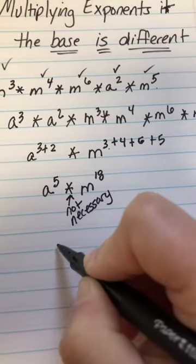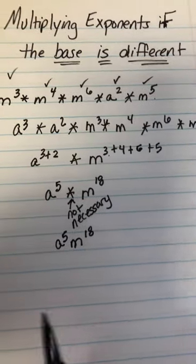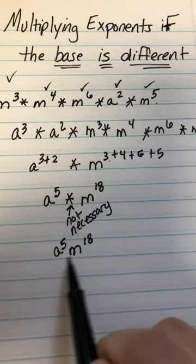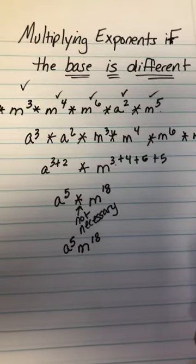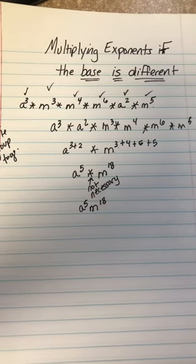So we can write it a to the fifth m to the 18th. When it's letters and there's no symbol in between them we know that they are multiplied. So multiplying the base if the base is different.